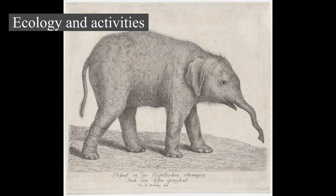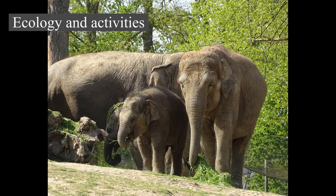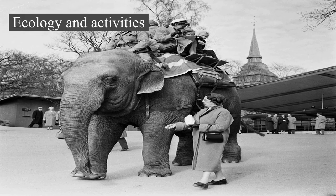The lions of Savuti, Botswana, have adapted to hunting elephants, mostly calves, juveniles, or even sub-adults during the dry season, and a pride of 30 lions has been recorded killing juvenile individuals between the ages of 4 and 11 years. There are rare reports of adult Asian elephants falling prey to tigers. Elephants appear to distinguish between the growls of larger predators like tigers and smaller predators like leopards, which have not been recorded killing calves; they react to leopards less fearfully and more aggressively.